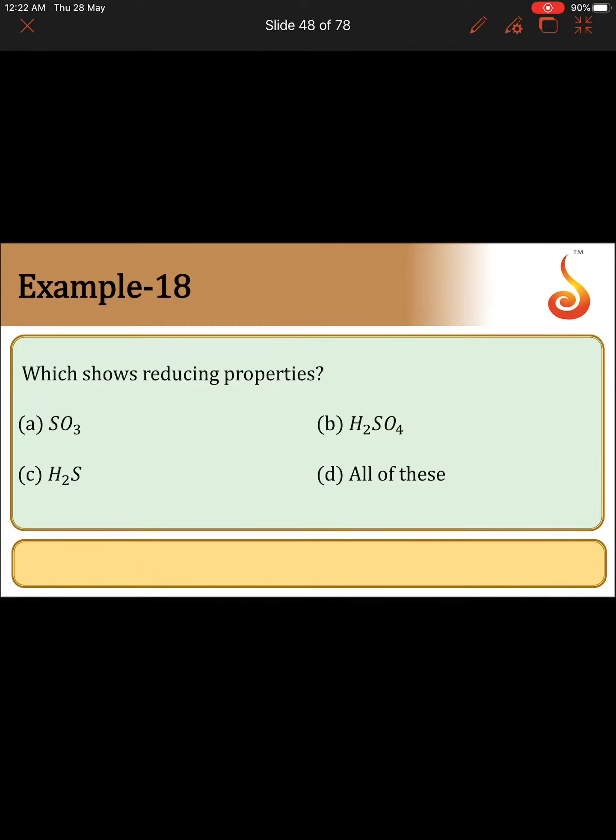Which shows reducing properties? We can identify which shows the reducing properties by calculating the oxidation state of the sulfur. In SO3, sulfur oxidation state is +6. Even in H2SO4 also, sulfur oxidation state is +6.